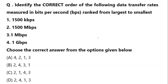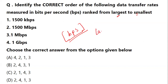Let's start the session. Questions with respect to storage are very common in the latest cycle, and you have to be careful in reading what exactly is being asked. In this question, you have to identify the correct order of the following data transfer rates measured in bits per second — that is bps. They are ranked from largest to smallest: kilobits per second, megabits per second, and gigabits per second.